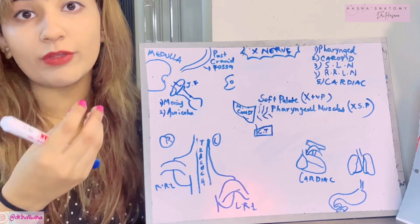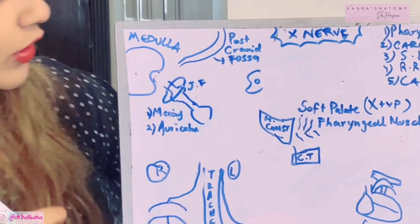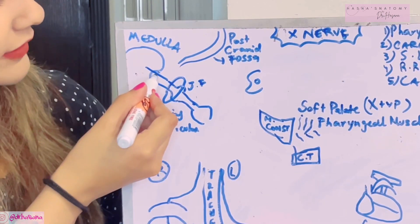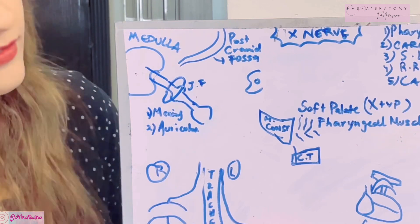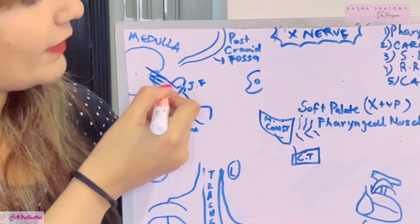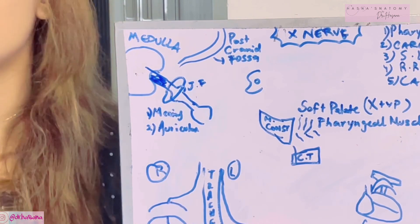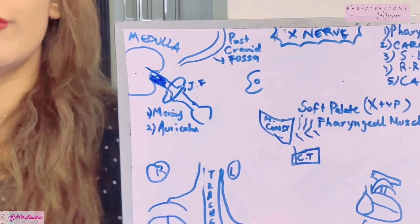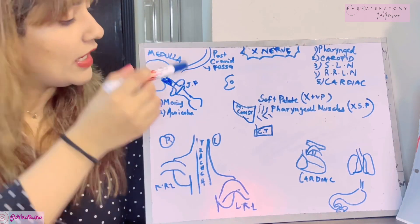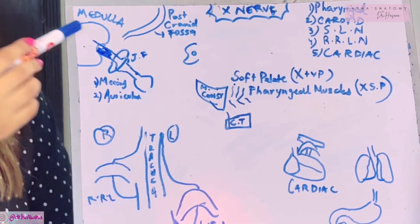Now let's talk about the gross anatomy of the vagus nerve — anything we can see with the naked eye. All the fibers leave from the medulla oblongata. The vagus nerve is the 10th nerve, the longest nerve, and provides the largest parasympathetic supply in the body. All those fibers spread out, but we'll focus on how this nerve courses and what branches it gives.